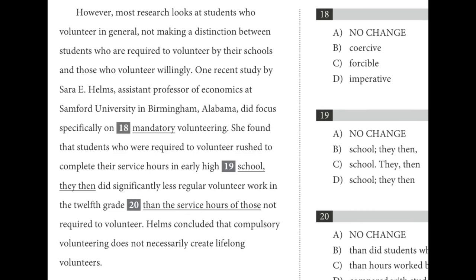For eighteen, we're trying to be precise with the word describing this volunteering. 'Mandatory' is the best answer. 'Coercive' implies someone is forcing you with some sort of threat. 'Imperative' means because it's really important or necessary. For a school situation, 'mandatory' is the best choice.